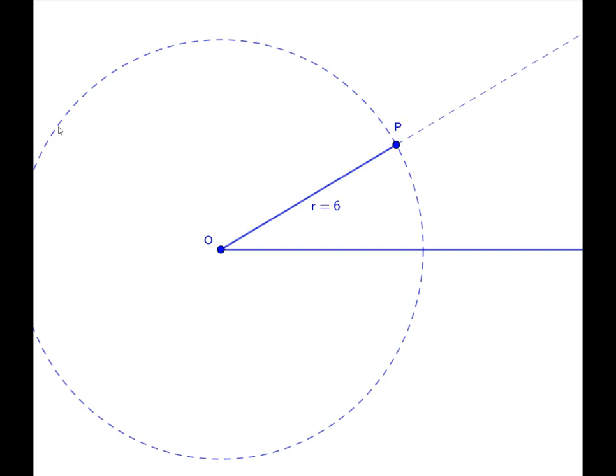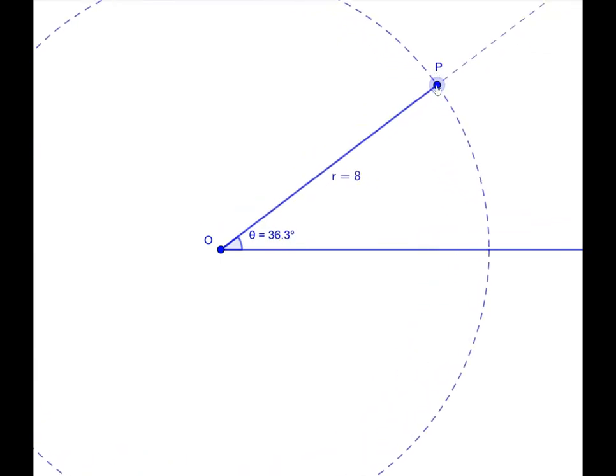And the other coordinate is going to be the angle formed between the polar axis and the segment we've constructed. So it's a two-dimensional space. We require two coordinates. And these two coordinate values uniquely define every point within the space.